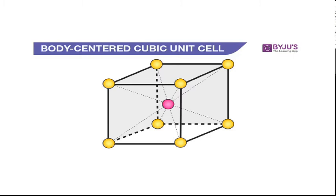That is why this one is called the body centered cubic structure. This is also an orthogonal system — the angle between the three axes is 90 degrees, and it is a cubic structure, meaning A, B, and C are all equal.